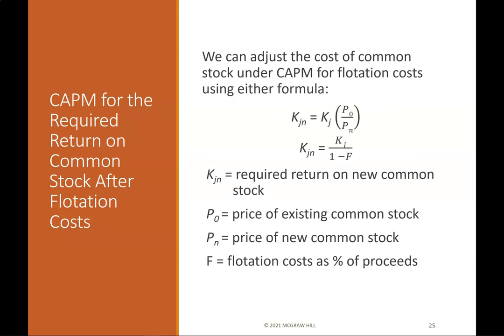CAPM — required return after flotation costs: We can adjust the cost of common stock under CAPM for flotation costs. The formula is KJN = KJ / (1 − F), where KJN is the required return on new common stock, Po is the price of existing common stock, PN is the price of the new common stock, and F is flotation costs as a percentage of proceeds.